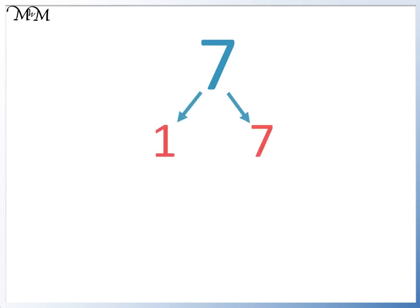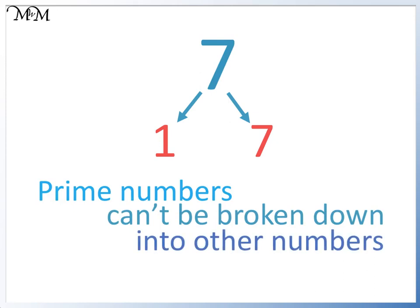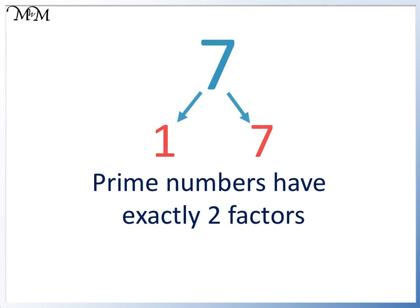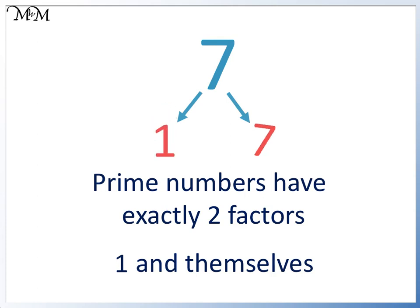7 can only be made by 1 times 7. We just get the same number, 7 times 1. 7 is called a prime number. Prime numbers can't be broken down into other numbers. We say prime numbers have exactly two factors: 1 and themselves. Factors are the whole numbers that can be multiplied together to make the larger number. For 7, the only option is 1 times 7.